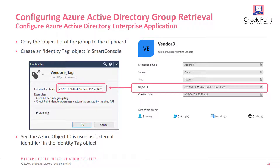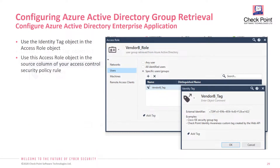In R80.40 we need to create a representation of the group defined in Microsoft Azure in the SmartConsole. We do this by using the identity tag object. The identity tag object will have the external identifier field matching exactly what is the object ID in Microsoft Azure. You then select this identity tag in the specific field of the access role object.